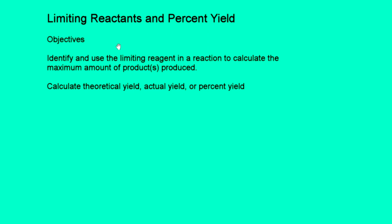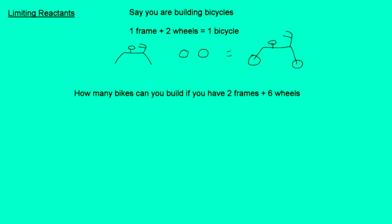Limiting reactants are important when chemists are doing a reaction. One of the reactants usually runs out before the other one. It's very much like building a bicycle. So we're going to build a bicycle. Here's our formula: you have one frame plus two wheels, make one bicycle. So how many bikes can you make if you have two frames and six wheels? This is what limiting is about.